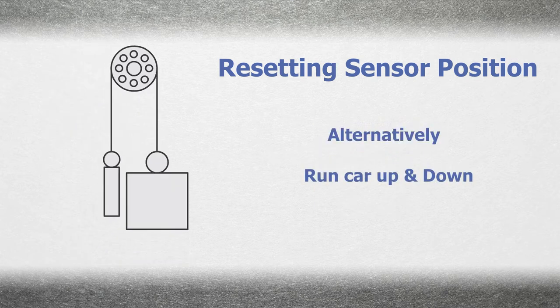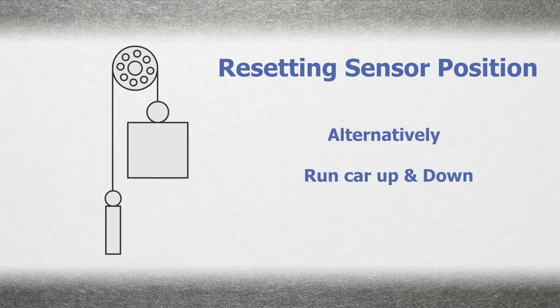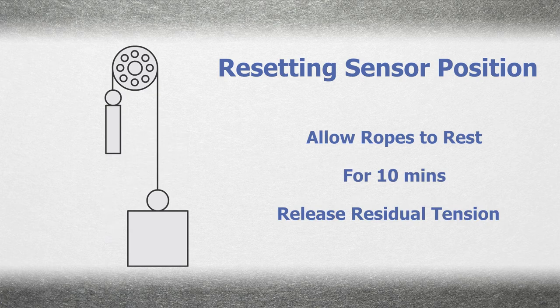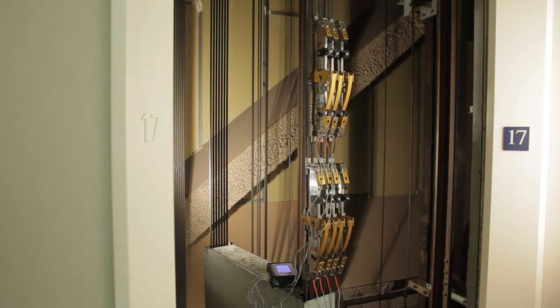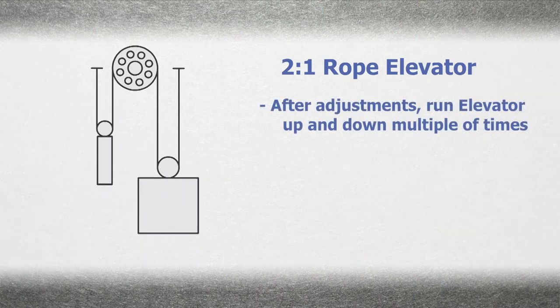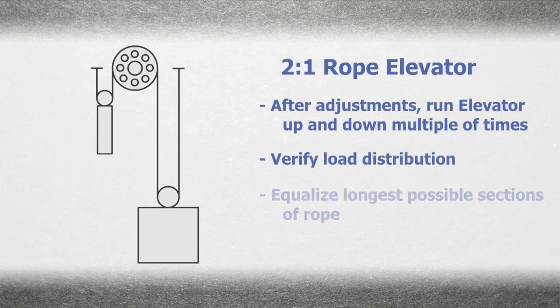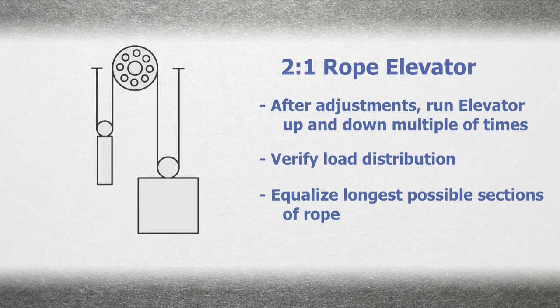Alternatively, you may run the car a bit and allow the ropes to rest for ten minutes to allow the residual tension to dissipate. For a 2-to-1 roped elevator, after adjustments, run the car up and down to verify load distribution. The goal is to equalize the longest possible sections of rope.